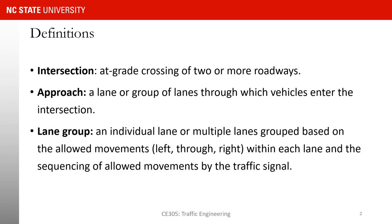On this slide I would like to talk about three main definitions that we are going to use over and over in this chapter. The first one is the definition of an intersection. It's when two or more roadways cross each other at the same grade — and the phrase 'at grade' is the key word here. So if you have one roadway that crosses another not at the same level, like an interchange on a freeway, that's not going to be the focus of this chapter. Intersections are at-grade crossings of two or multiple roadways.